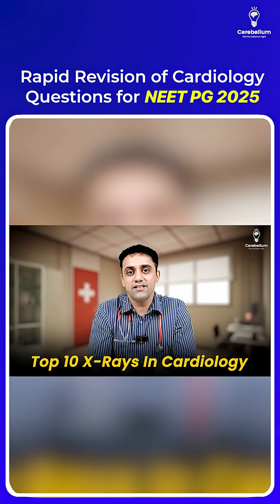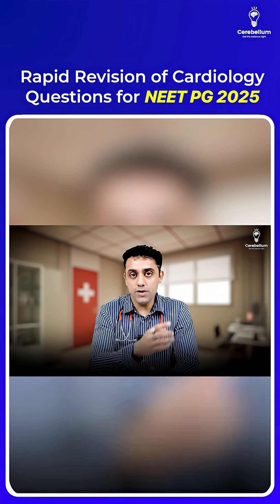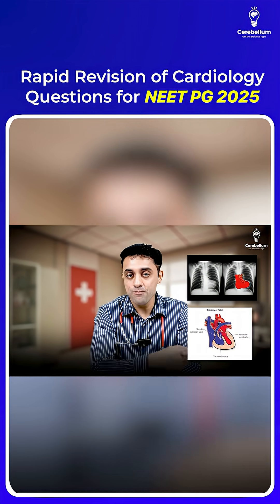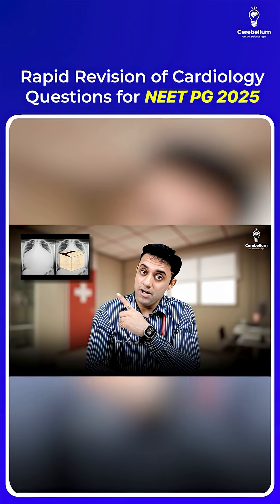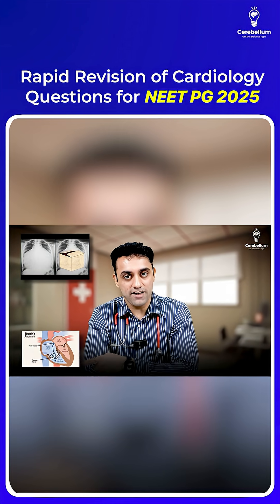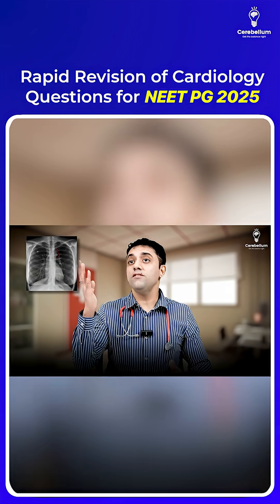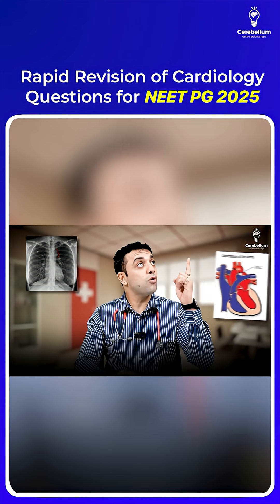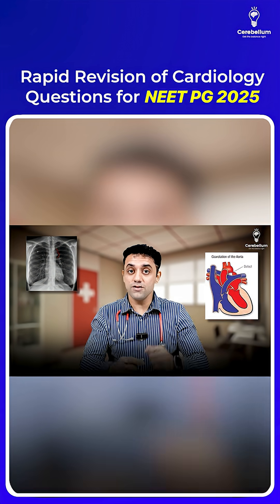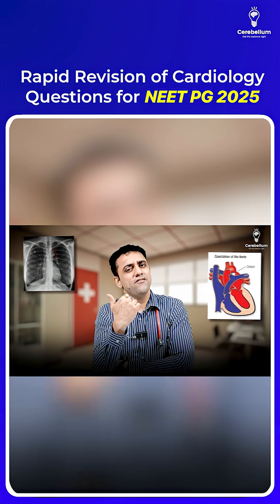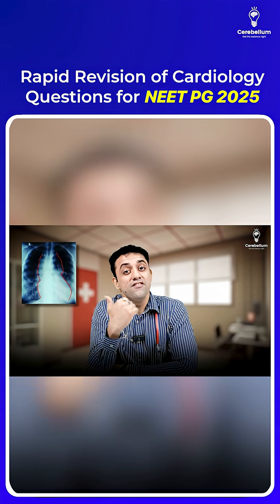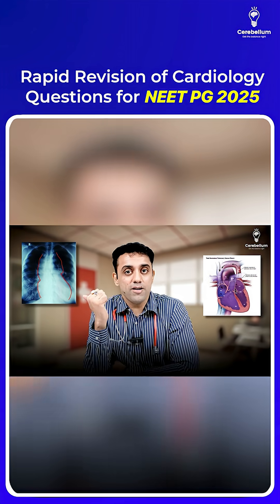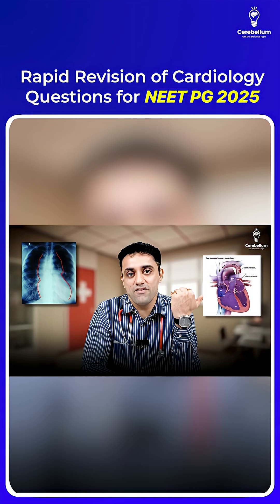If I ask you the top X-ray findings in cardiology: where do you see boot shape heart? Boot shape heart is seen in tetralogy of Fallot. Where do you see box shape heart? Box shape heart is seen in Ebstein anomaly. Where do you see figure of 3 appearance? Figure of 3 appearance, very importantly, you see in coarctation of aorta. And where do you see figure of 8 appearance? Figure of 8 appearance you see in supracardiac TAPVC.